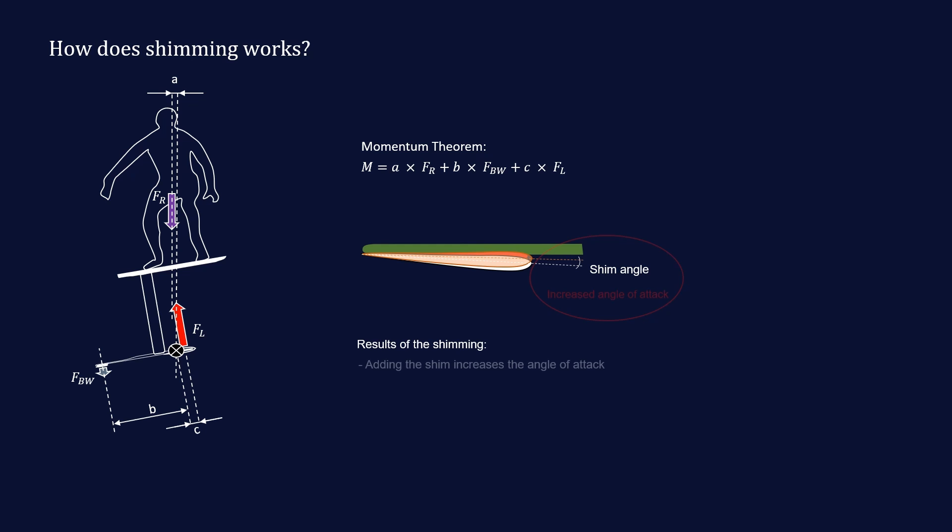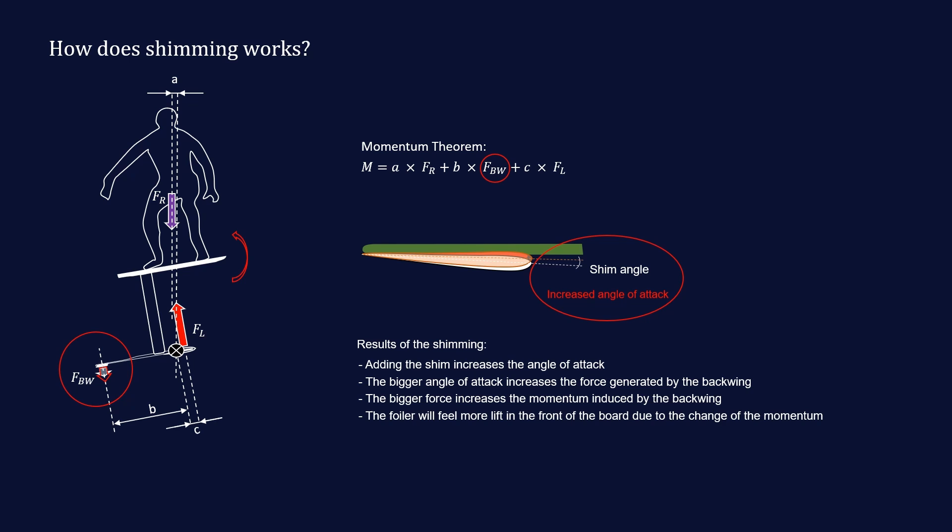Having added the shim has increased the angle of attack of the back wing. That results in a bigger force generated by the back wing and with that also in a bigger momentum induced by the force of the back wing. Due to that change in the momentum, the foiler will feel more lift in front of the board. As we can see, adding a shim between the fuselage and the back wing has an influence on the overall system.